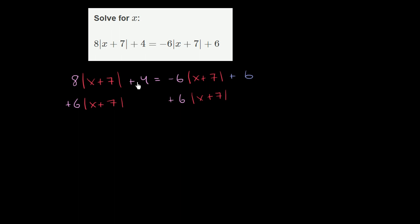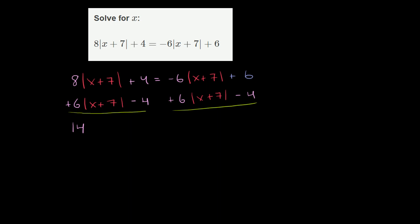And I want to get all of the constant terms onto the right hand side, so I want to get rid of this positive 4. The easiest way is to subtract 4 from both sides. So on the left hand side, if I have 8 of something and I add 6 of that same something, I now have 14 of that something — 14 times the absolute value of x plus 7. The 4 and the negative 4 cancel out, and the absolute value of x plus 7 terms cancel out. And we're left with 6 minus 4, which is just 2. So that's going to be equal to 2.